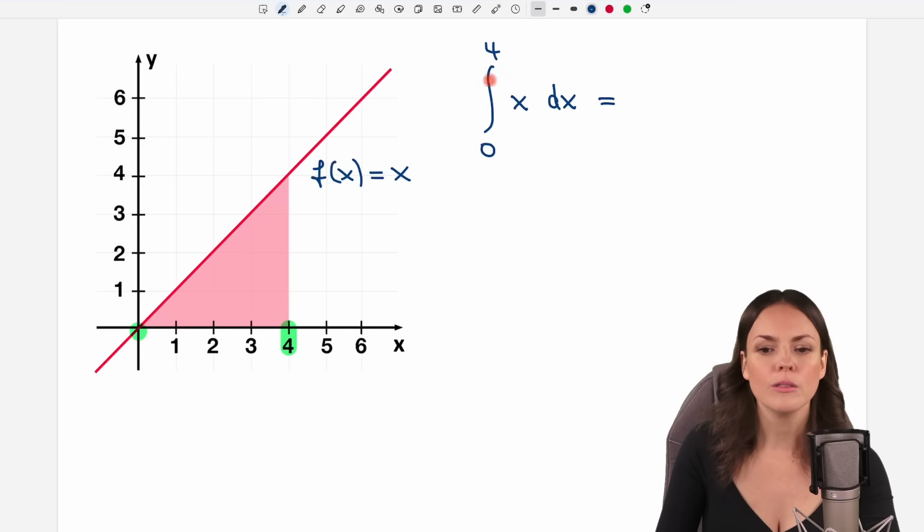Now we only have to calculate this integral. And this goes as follows: we have to find the antiderivative of our function here. We write these brackets and take our limits 0 to 4 and write them here.